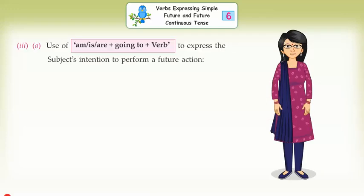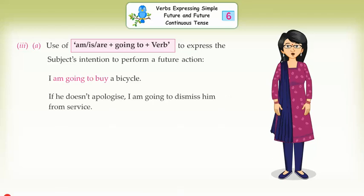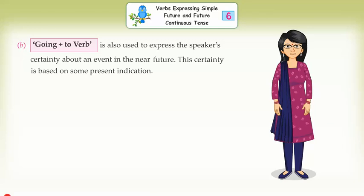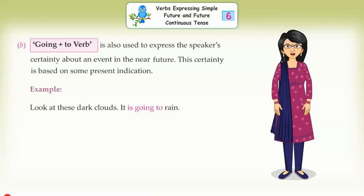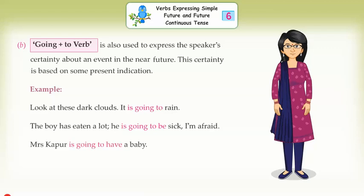Third, use of am/is/are + going to + verb to express the subject's intention to perform a future action: I am going to buy a bicycle. If he doesn't apologize, I am going to dismiss him from service. 'Going to' + verb is also used to express the speaker's certainty about an event in the near future, based on some present indication. Example: Look at these dark clouds — it is going to rain. The boy has eaten a lot — he is going to be sick, I am afraid. Mrs. Kapoor is going to have a baby.